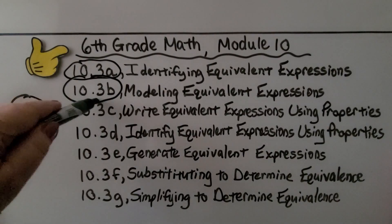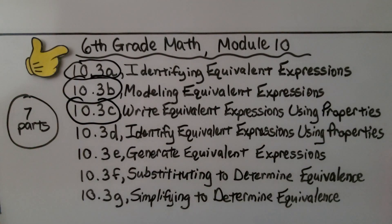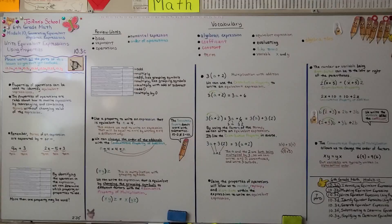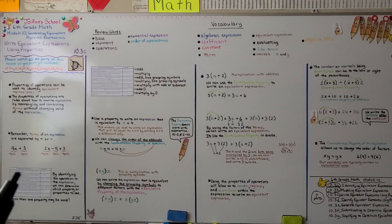We're finished with part three and moving on to part four: Identify Equivalent Expressions Using Properties — that's lesson 10.3d. There'll be a copy of the properties of operations chart on my Joanne School Facebook page in the photo section and in the YouTube community section for my channel. I hope you have a wonderful day, and I hope you'll join me next time. Bye!